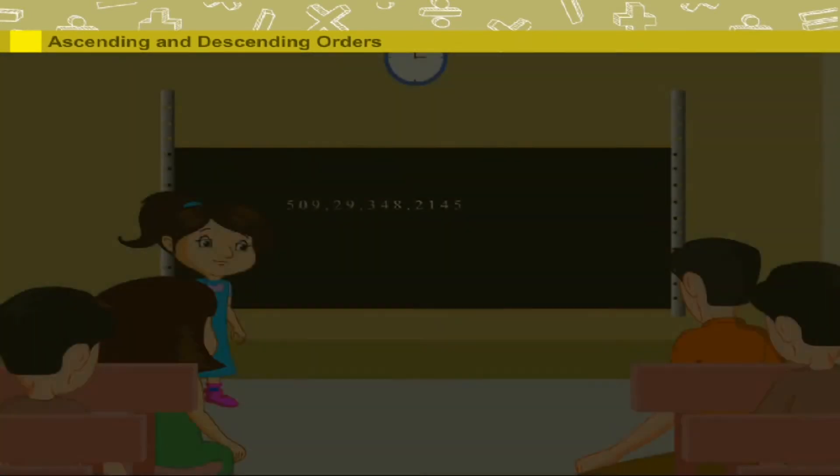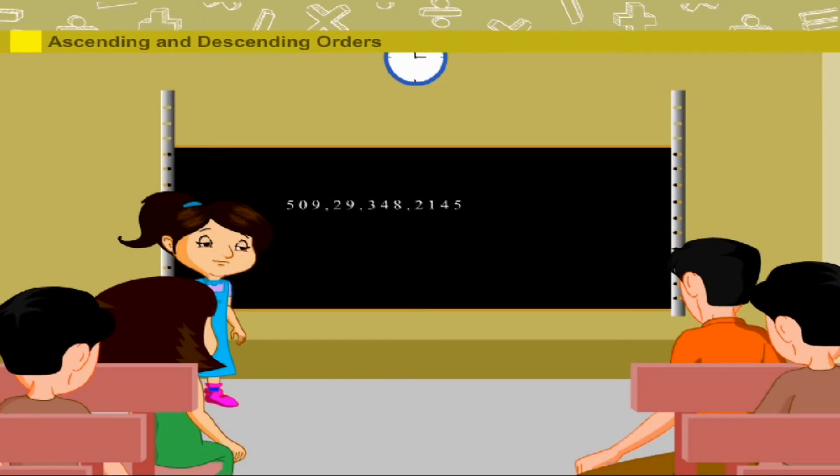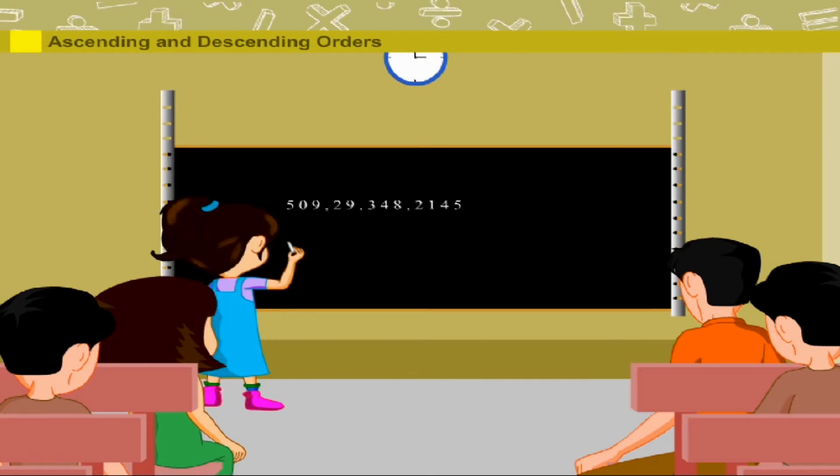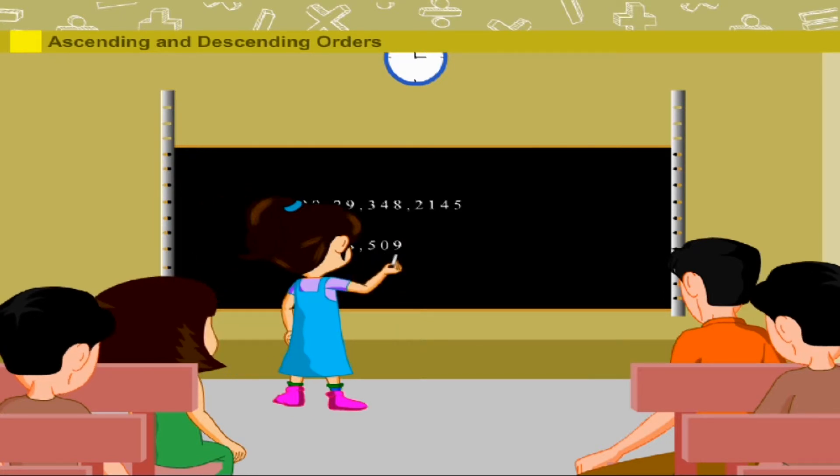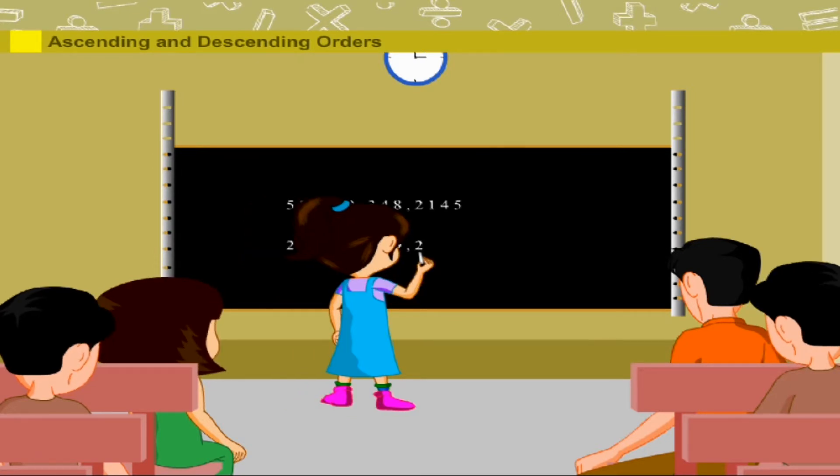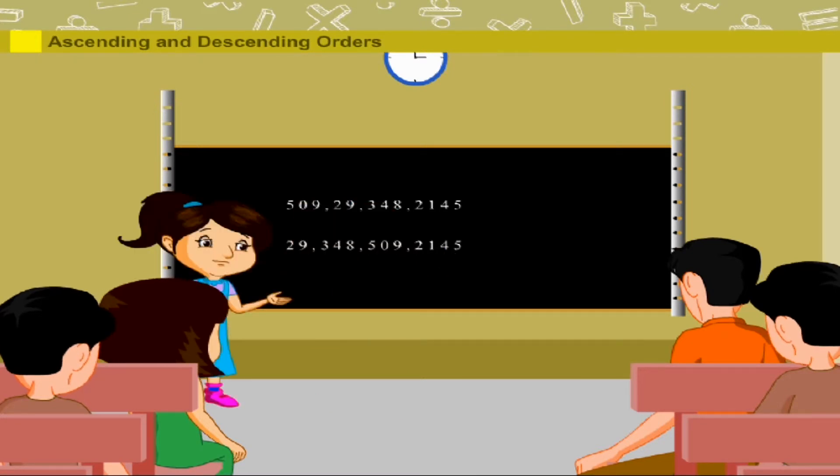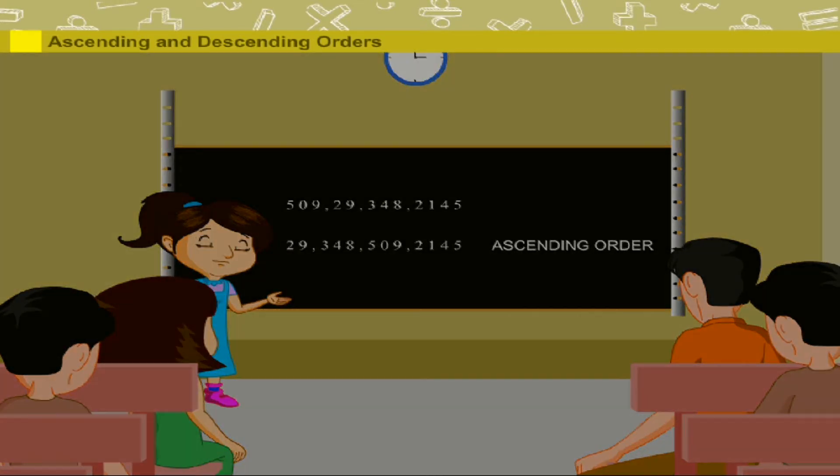Shinu arranges the numbers from the smallest to the greatest. First, she writes twenty-nine, then three hundred and forty-eight, followed by five hundred and nine, and finally two thousand one hundred and forty-five. She explains that such an arrangement of numbers is called ascending order of numbers.